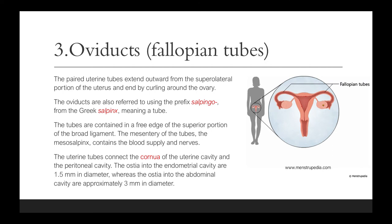The uterine tubes connect the cornua of the uterine cavity and the peritoneal cavity. The ostia into the endometrial cavity are 1.5 mm in diameter, whereas the ostia into the abdominal cavity are much wider, at about 3 mm in diameter.